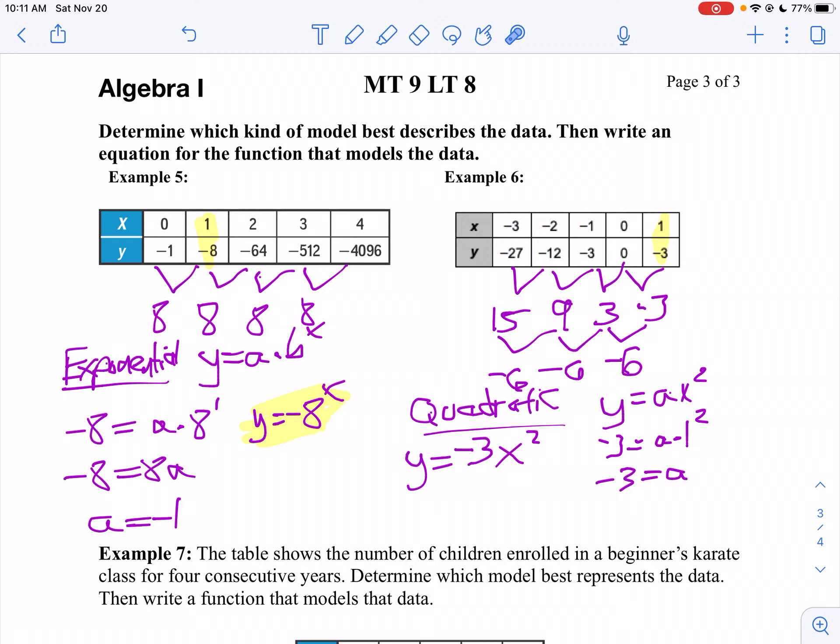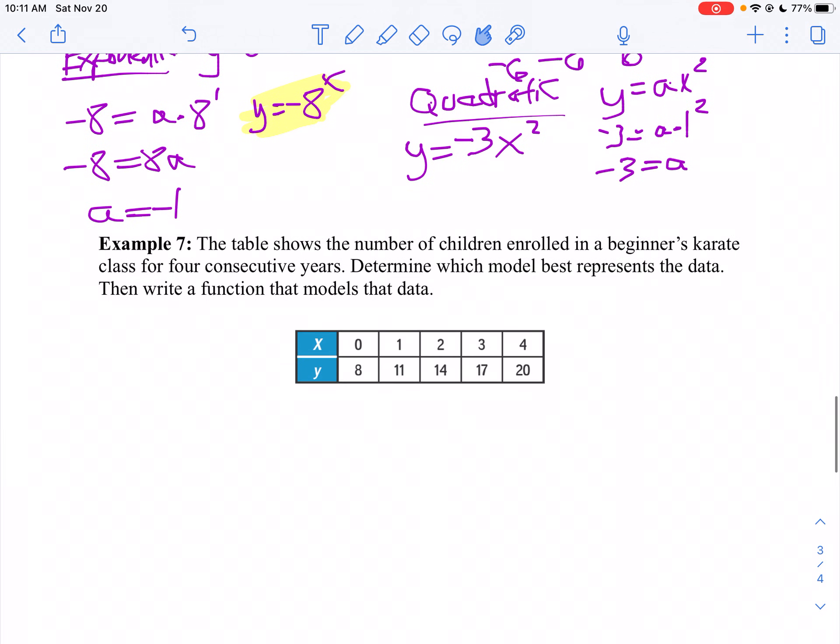Now if we take a look at Example 7, it says the table shows the number of children enrolled in a beginner's karate class for four consecutive years. Determine the best model to represent this data, then write a function that models this data. Let's look at our differences: 11 minus 8 is 3, 14 minus 11 is 3, 17 minus 14 is 3, 20 minus 17 is 3. Oh, it's linear.